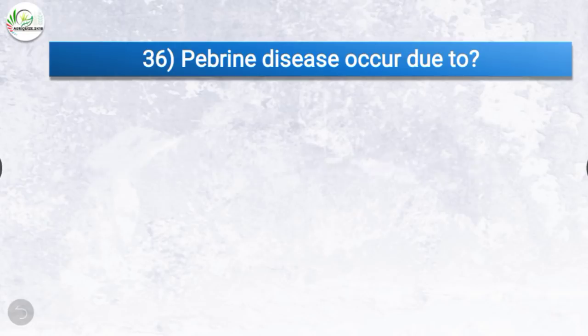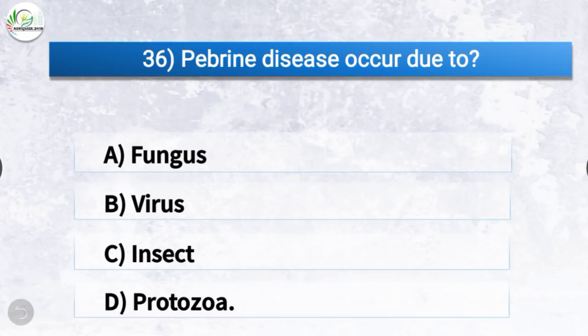Question number 36: Pebrine disease occurs due to? The correct answer is option D, protozoa. Pebrine disease occurs due to protozoa.